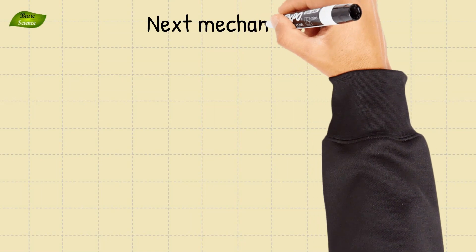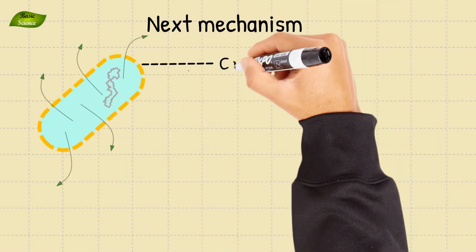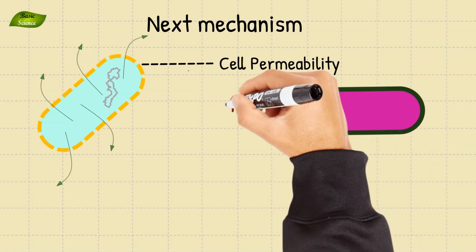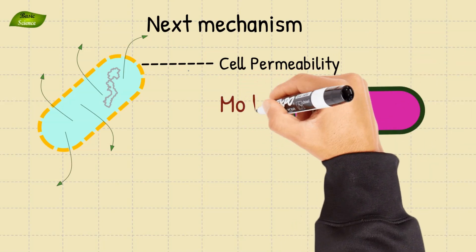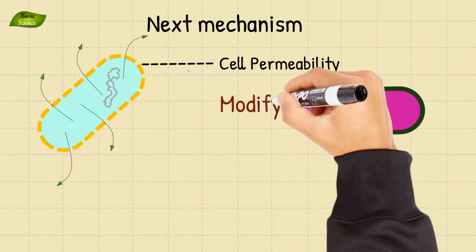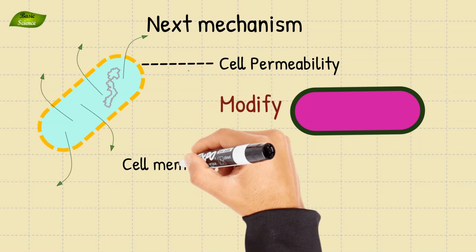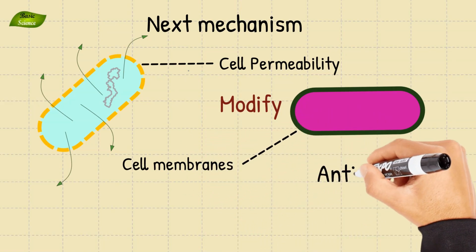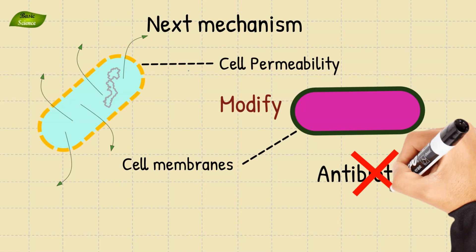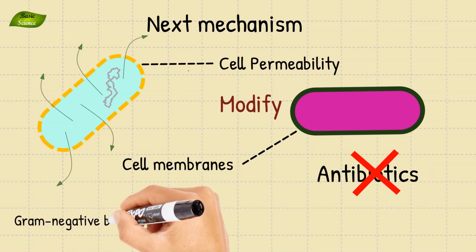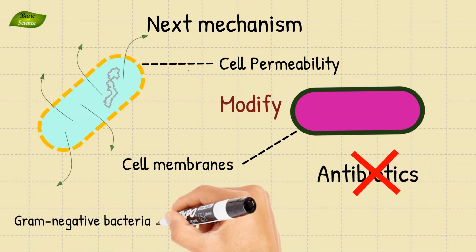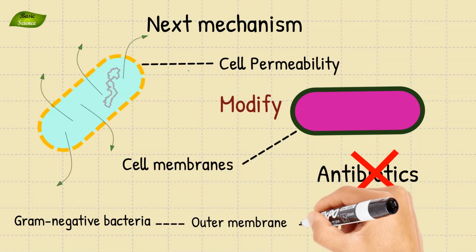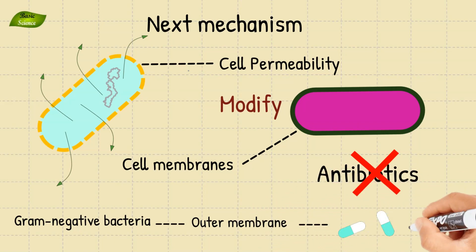The next mechanism is the alteration of cell permeability. Some bacteria can modify the permeability of their cell membranes, making it more and more difficult for antibiotics to penetrate and reach their target sites within the cell. An example includes gram-negative bacteria altering the structure of their outer membrane, limiting the entry of certain antibiotics.